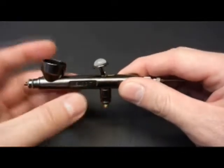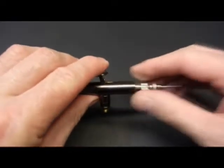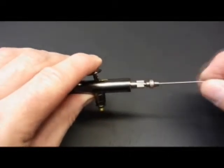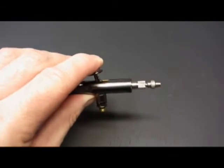You can see the end of the needle there. So we'll press down on the trigger. Just make sure nothing is obstructing the needle. And we'll pull the needle straight out of the back.